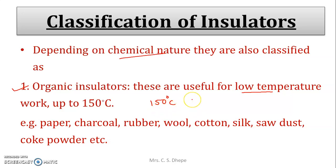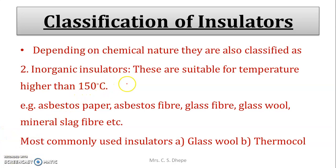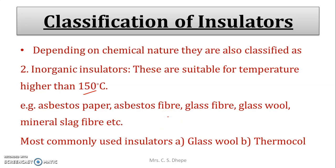The other type is inorganic insulators. These are suitable for higher temperatures, above 150 degrees Celsius. Examples include asbestos paper, asbestos fiber, glass fiber, glass wool, and mineral slag. The main difference is that inorganic insulators are used for higher temperatures, while organic insulators are used up to 150 degrees Celsius.